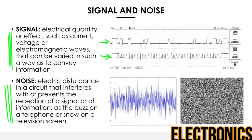Conversely, noise is an electrical disturbance in a circuit that interferes with or prevents the reception of a signal or information. You can think of it as the buzz on a telephone or snow on a television screen. This graph shows how voltage looks when carrying just noise — it goes up and down in a random fashion, not carrying any information. It is important to make sure the signal is always much bigger than the noise.